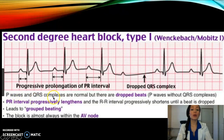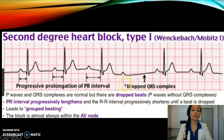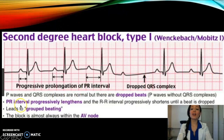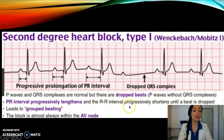The P waves and QRS complexes look normal, but there are dropped beats. The PR interval progressively lengthens and the R-to-R interval progressively shortens until a beat is dropped — and that's what happens here.